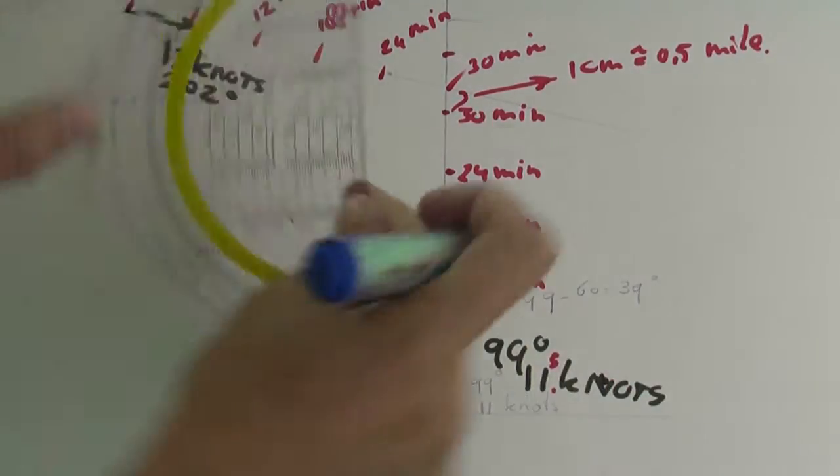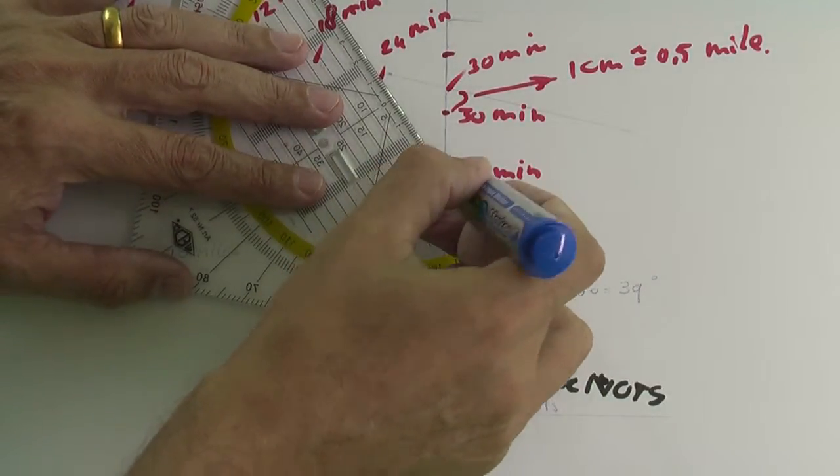So according to the plot, it's only one centimeter of the ship's crossing, boat crossing, that is 0.5 mile.